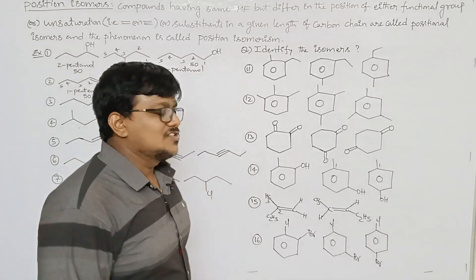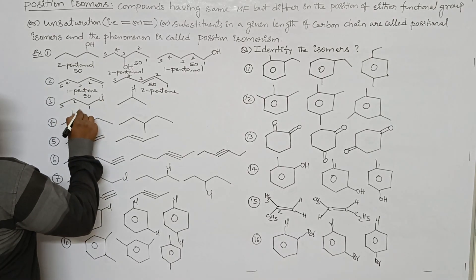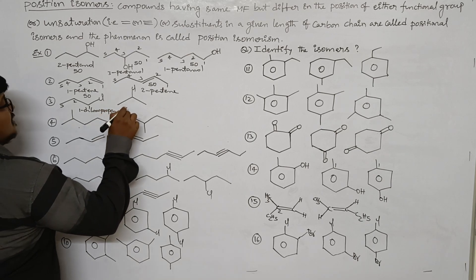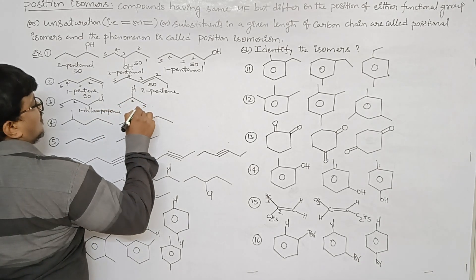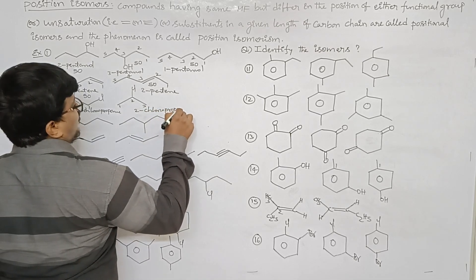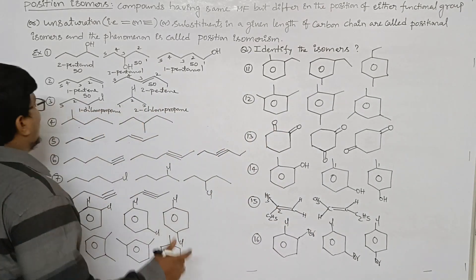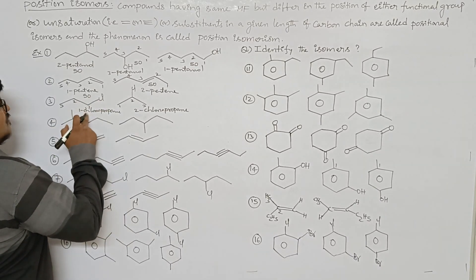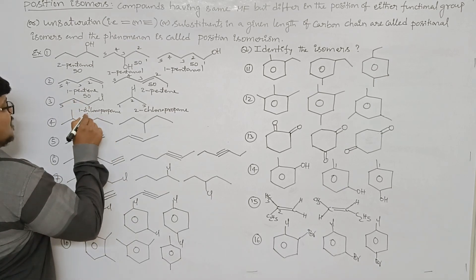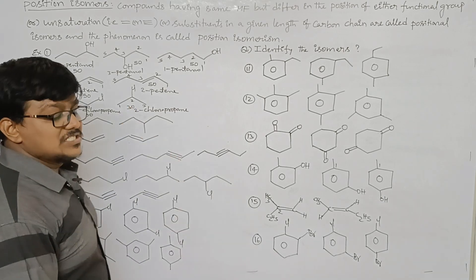The third example: the first compound is named 1-chloropropane and the second compound is 2-chloropropane. Both have the same root word, but the substituent position differs — the first compound has chlorine at the first position, the second at the second position. The isomeric number for both is 30, so the isomeric number is the same.